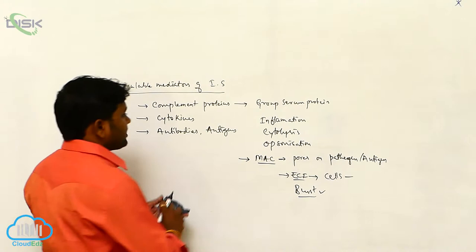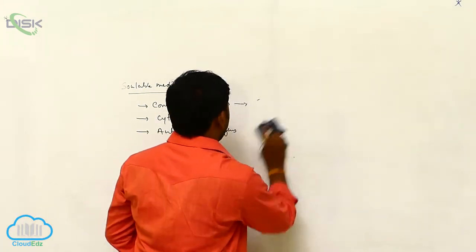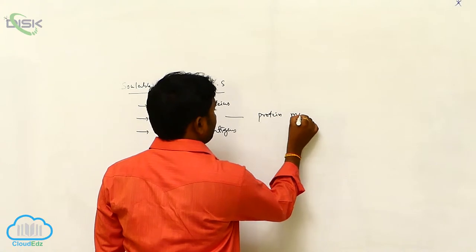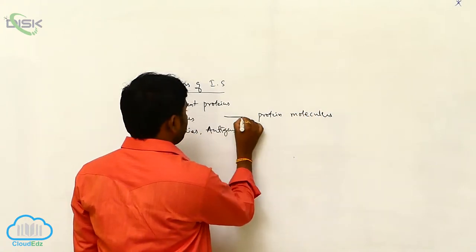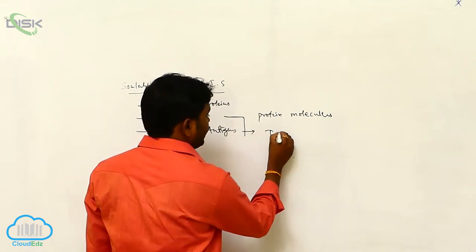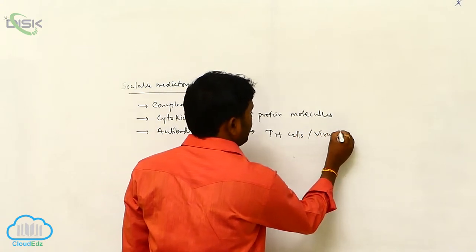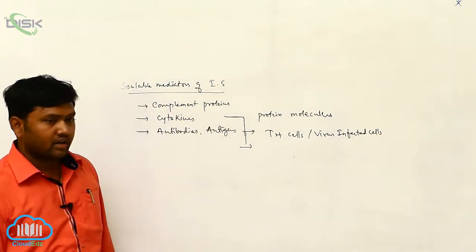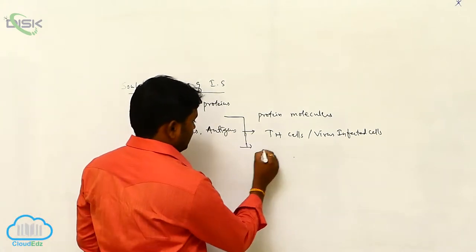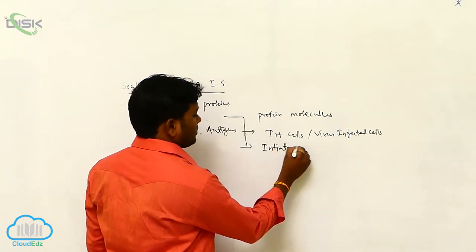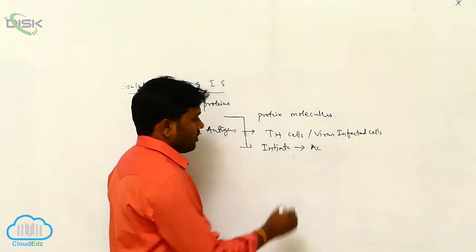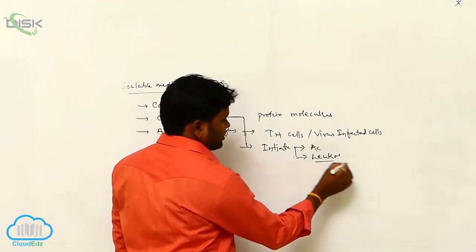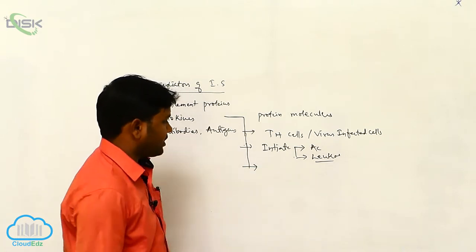Next, cytokines. These cytokines are small, soluble protein molecules. They are produced or secreted by the TH cells or virus-infected cells. Cytokines initiate the activation of the immune system of the leukocytes.